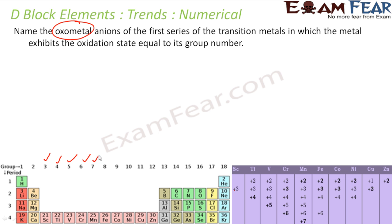Iron has oxidation states +2 and +3 and is in group 8. Cobalt +2 and +3 in group 9. Nickel is +2 in group 10 — no match. Copper is +2 in group 11 — no match. Zinc is +2 in group 12 — no match. So scandium, titanium, vanadium, chromium, and manganese exhibit oxidation states equal to their group number.